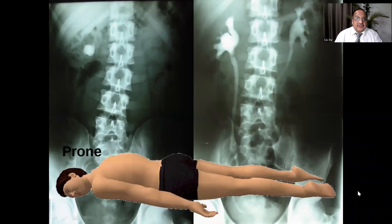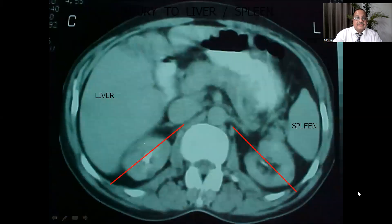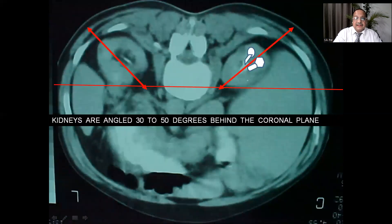Our index case is a patient with a stone in the renal pelvis, and because eighty percent of us do prone PCNL, our patient is also lying in the prone position. Please pay attention to the access of the kidneys. When the same patient is turned prone, you can very well see that the access of the kidney is thirty degrees tilted towards the coronal plane. This is the tilt of the kidney which we are seeing when the patient is lying prone in front of us, and these are our targets.